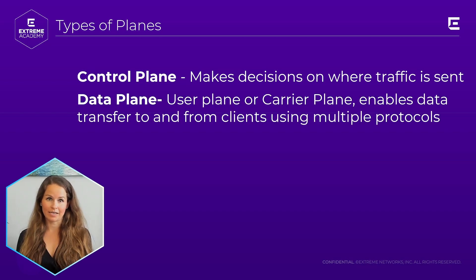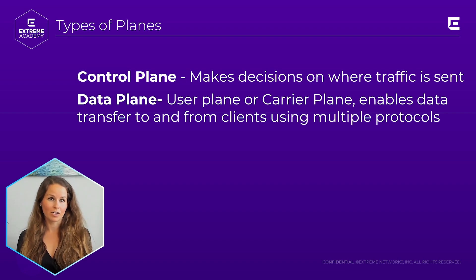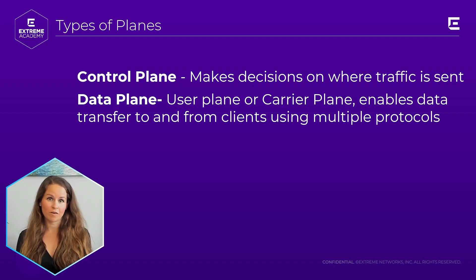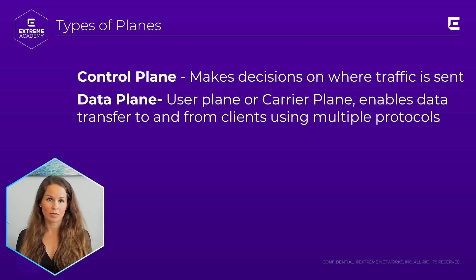Next is the data plane, and that refers to all the functions and processes that carry user traffic throughout the network. It's also sometimes referred to as the user plane, the forwarding plane, or carrier plane. The data plane enables data transfer to and from clients, handling multiple conversations through multiple protocols.